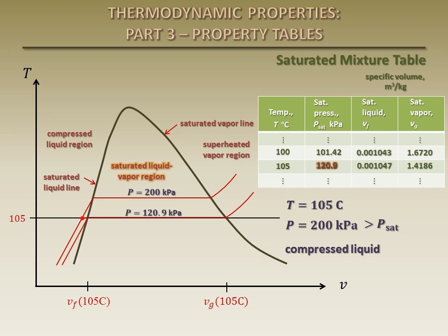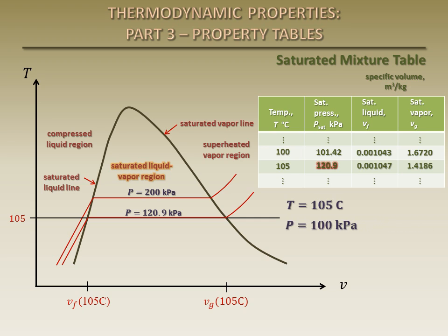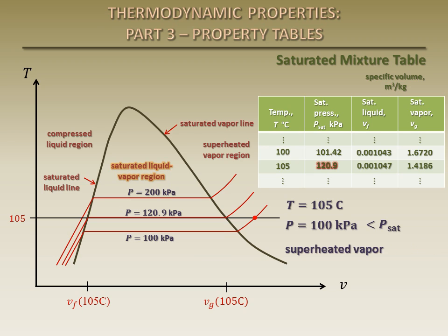Therefore, we can conclude that it's a compressed liquid. We cannot use the saturated mixture table to determine the properties; we must use a compressed liquid table, which we will discuss later. Now suppose that the temperature is the same but the pressure is 100 kilopascals. The pressure is less than the saturation pressure at the given temperature, and so it lies on a lower constant pressure line. We can conclude that it's a superheated vapor, and we must use a superheated vapor table, which we will also discuss later.